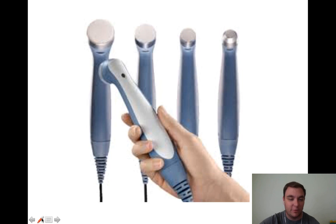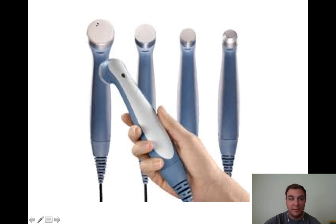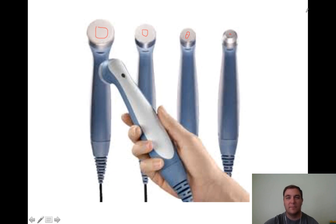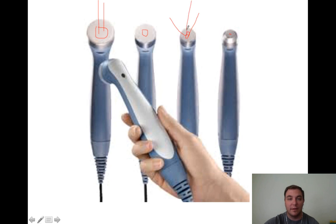These are different ultrasound heads you can buy for a unit - the ERAs will be different for all of them. The larger ERA produces a more collimated beam; the smaller ERA produces a more divergent, cone-like beam.